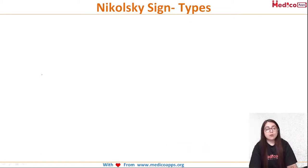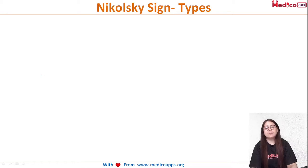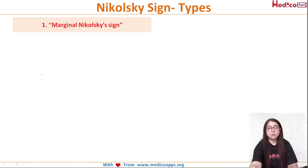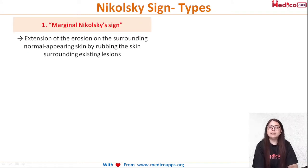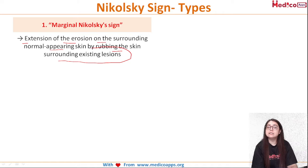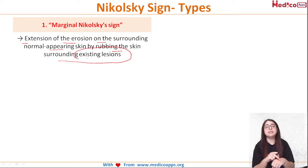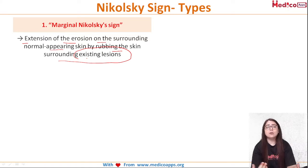Coming to the types — especially important at PG level — Nikolski sign is described in two ways. First is marginal Nikolski sign: there is extension of erosion onto the surrounding normal-appearing skin by rubbing the skin surrounding the existing lesion. Applying tangential pressure includes the surrounding area in the new erosion.